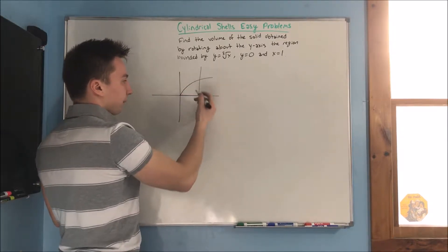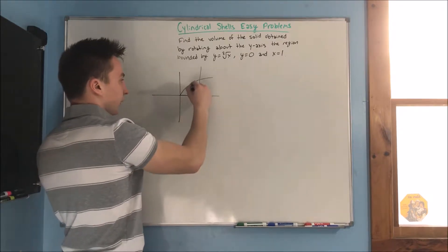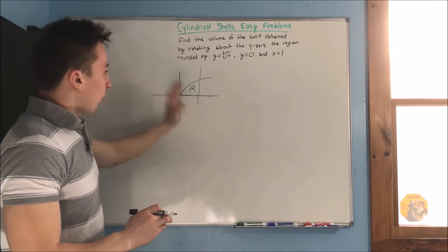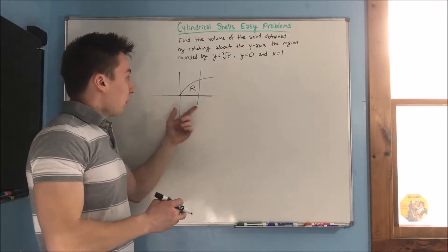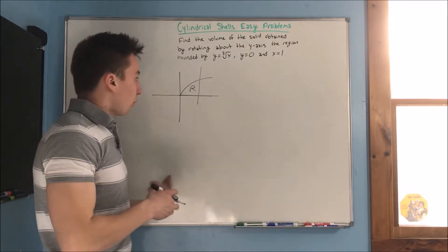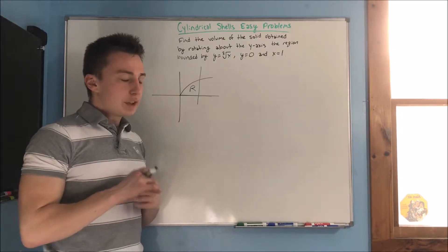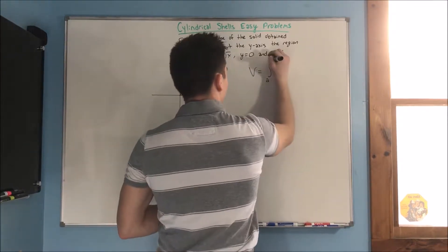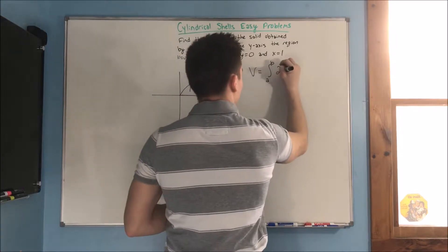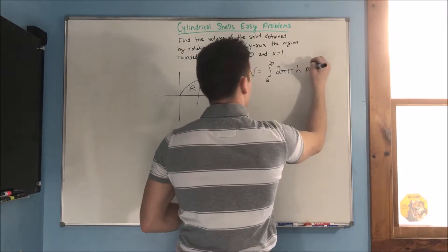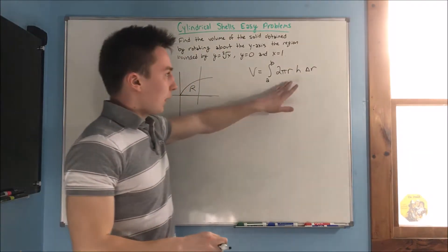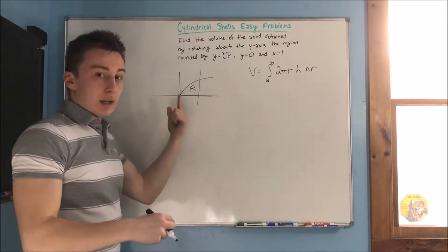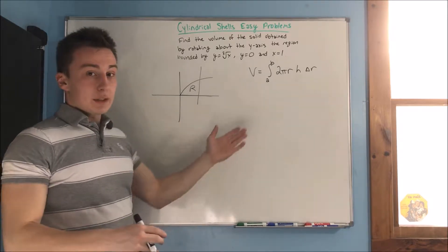Starting off, we know that we can draw our graph — that's really the starting point for a lot of problems. So we have y equals the cube root of x, y equals 0, and x equals 1. We know we have this little region right here — let's call it region R. We know our region and we know we're rotating about the y-axis. We can't use the disk method, and it's just so much easier to use cylindrical shells for this problem. Let's write down our formula: volume equals the integral from a to b of 2π r times the height times δr — that's the circumference times the height times the thickness.